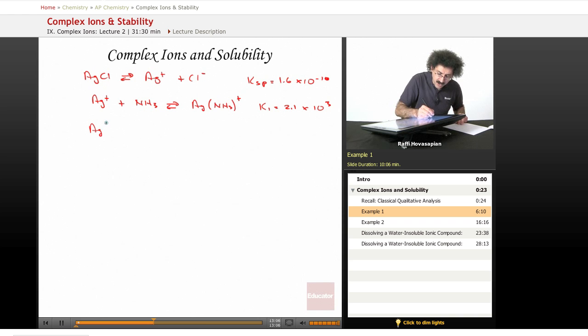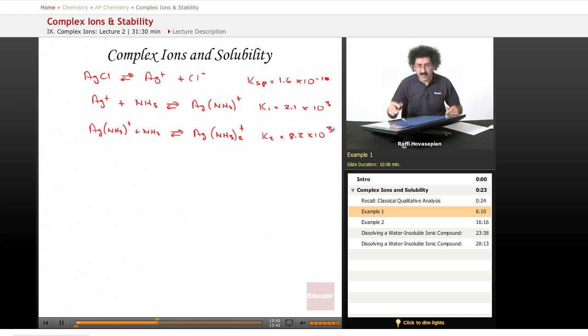And then the monoamine reacts with another molecule of ammonia to form the diamine complex ion. Symbols, symbols, symbols, I tell you. This is 8.2 times 10 to the positive 3. I'm telling you there are so many places to make mistakes when you do this chemistry because there's so much symbolism. That's the thing. Concepts are not difficult. It's the symbolism that gets in the way. And that's what's often frustrating about science. Not too difficult, but just symbolism makes you crazy.